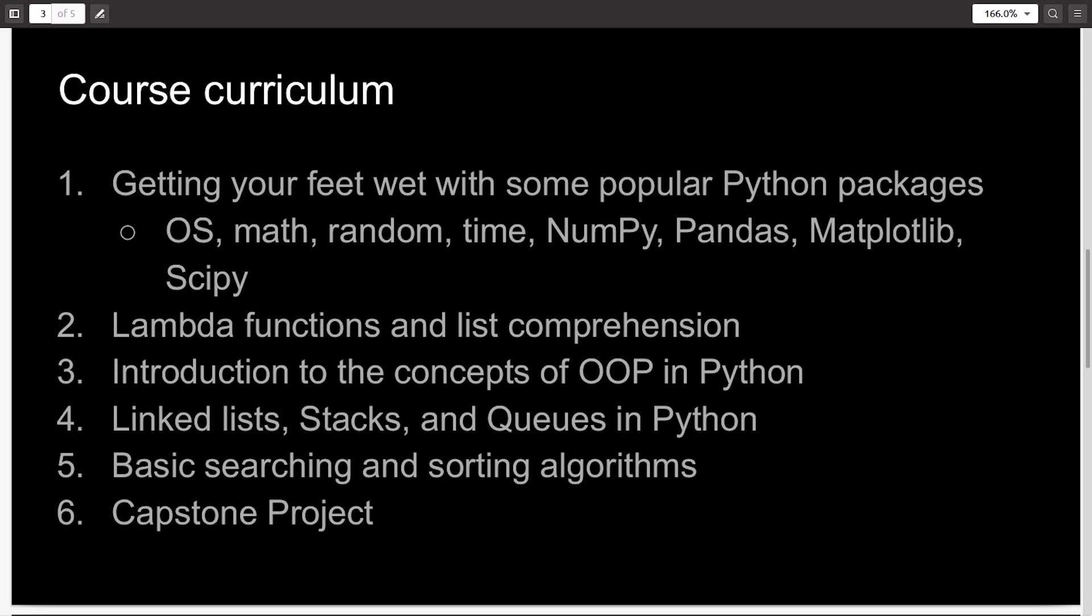And then the next module is about lambda functions and list comprehension. So lambda functions are small anonymous functions, and list comprehension basically replaces loops which deal with lists with a single line.